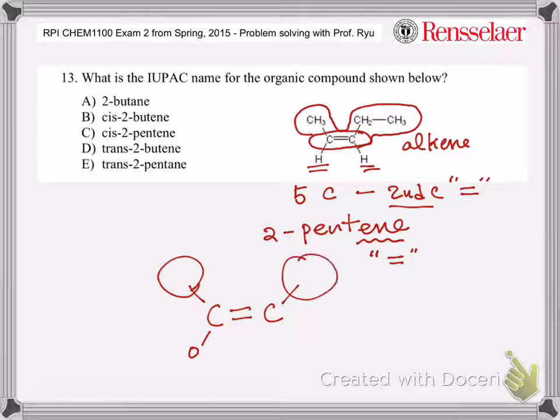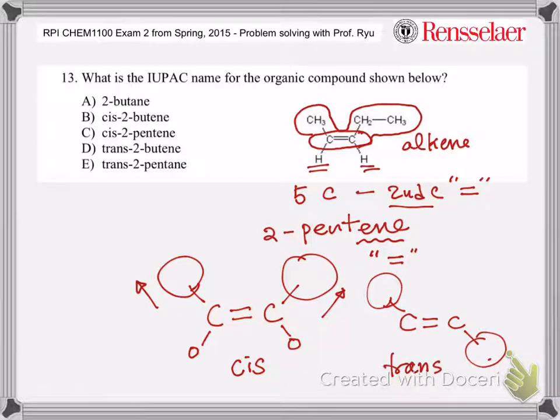If the bigger and the smaller are pointing on the same side, this is what we call the cis isomer. If the bigger one is pointing opposite, that's what we call the trans. You see this methyl is bigger than hydrogen and the ethyl is bigger than hydrogen.